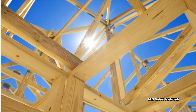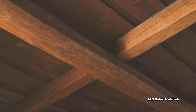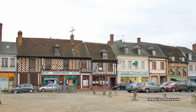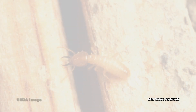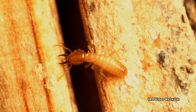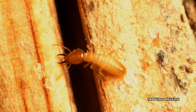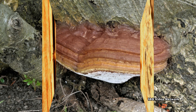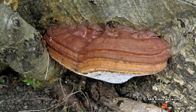Homes and many other types of buildings have long been constructed of materials made from wood. When properly maintained and protected, buildings made from wood can last for centuries. Termites and wood-destroying insects have long been blamed for the destruction of wood used in buildings, but they are not the only culprits. Wood also makes for an ideal food source for many types of fungi.